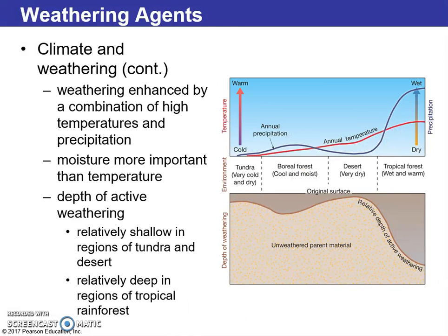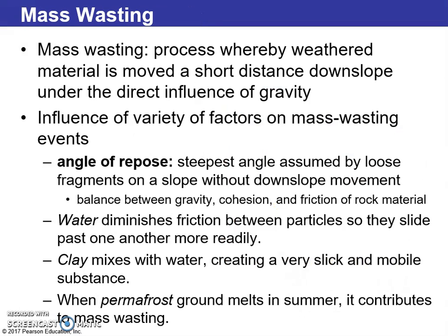Climate weathering can be enhanced or exacerbated through a combination of high temperatures and precipitation, which we see illustrated in the chart in the top right. We can also see surface degradation through climate and weathering.